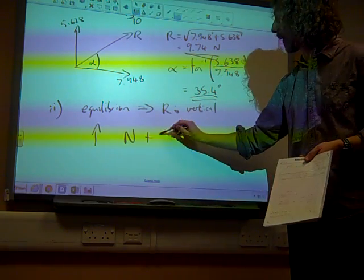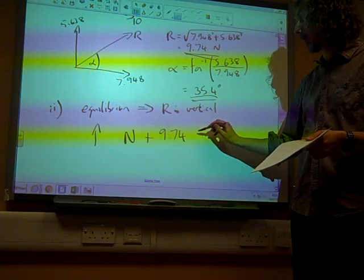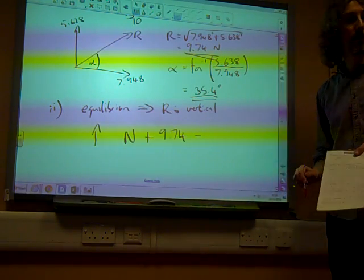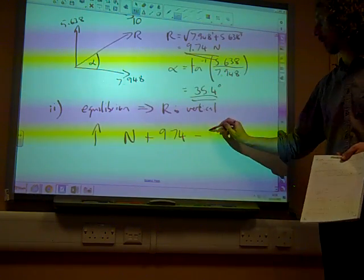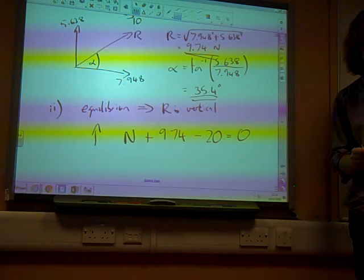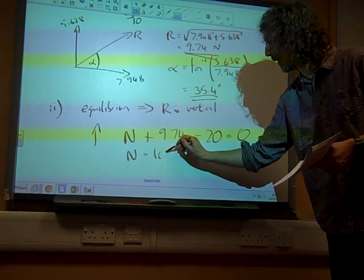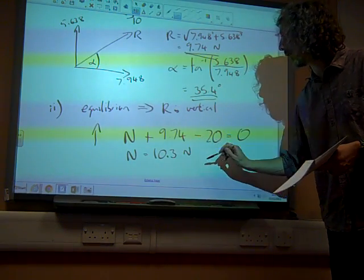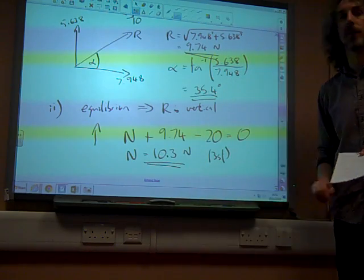minus the weight, and the weight we've just been told is 20 newtons, is equal to zero, because it's in equilibrium. And if we rearrange that little equation, we get that N is 10.3 newtons to three significant figures. There we go.